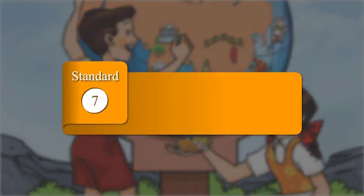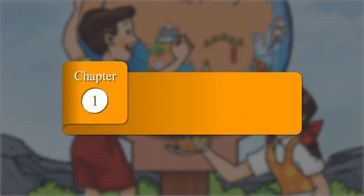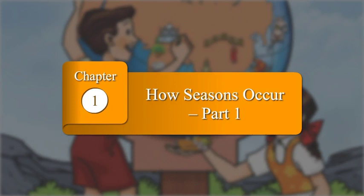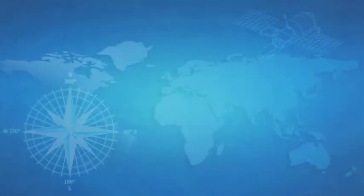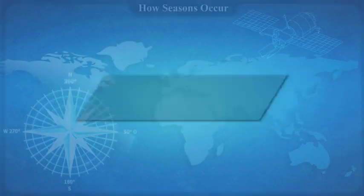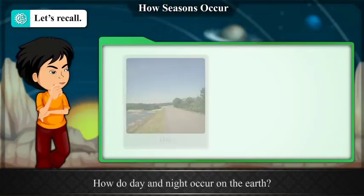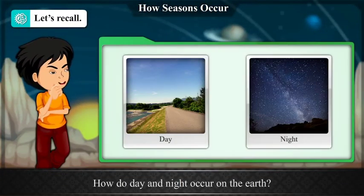Standard 7 Geography, Chapter 1: How Seasons Occur, Part 1. How Seasons Occur? Let's Recall. How do day and night occur on the earth?